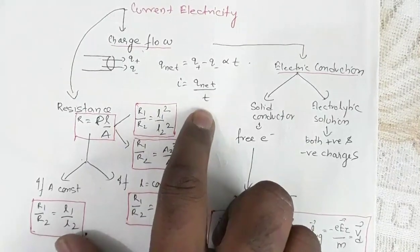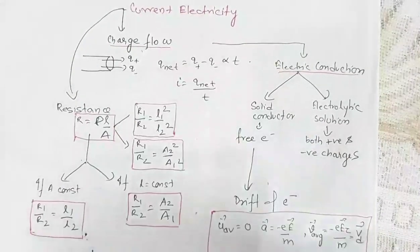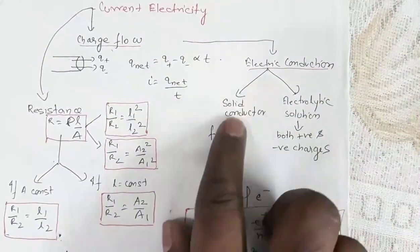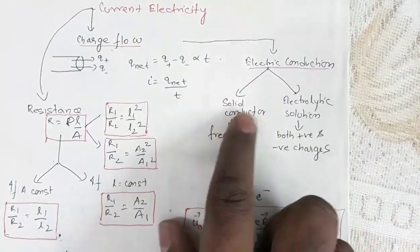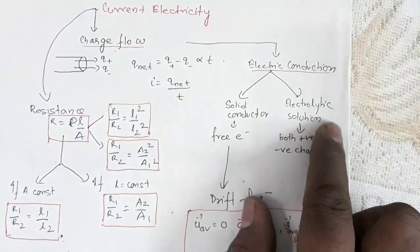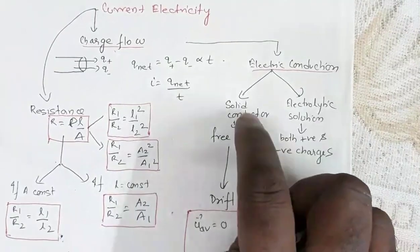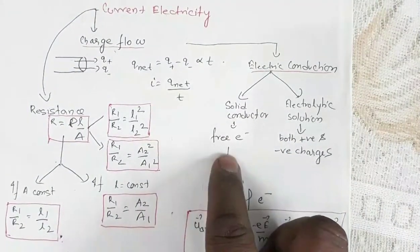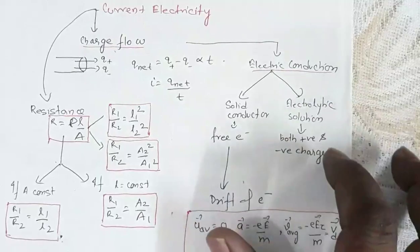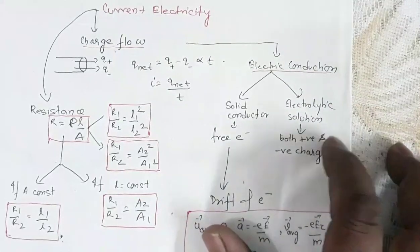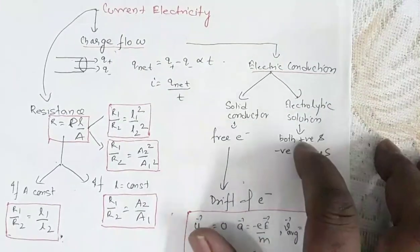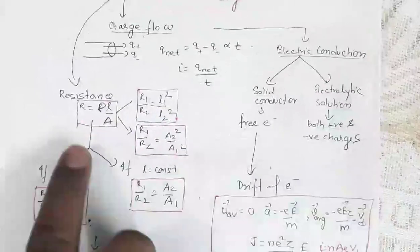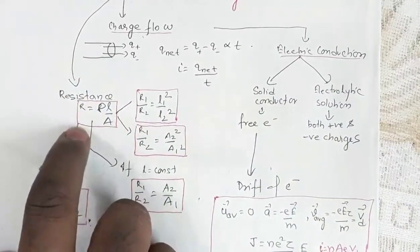Electric conduction can occur in two cases: one is through solid conductors, and the other is in electrolytic solution. In solid conductors, conduction is through free electrons. In electrolytic solution, conduction is through both positive charges as well as negative charges.